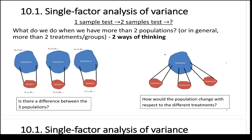So basically we have multiple populations and we take a sample from each population and ask: is there a statistically significant difference between the means of those populations? Multiple populations — more than just two. We know how to do a single population, we know how to do two populations, but now we're looking at many: three, four, etc.